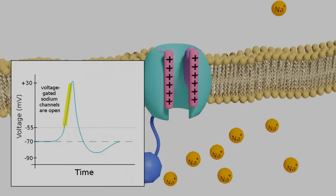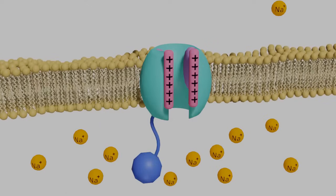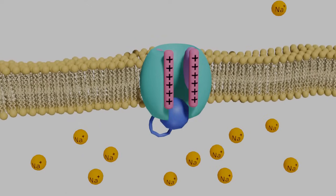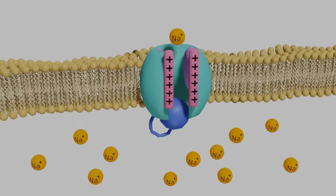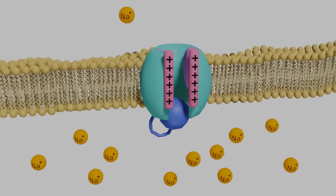However, around positive 30 millivolts, the inactivation gate will engage. This will block the further influx of sodium, even though the voltage gate is open.